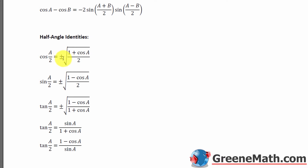This plus or minus is there to tell you that you want to take the appropriate sign based on the quadrant that you're in. Cosine is going to be positive in quadrants 1 and 4. So let's go ahead and minimize this and get to the first problem.